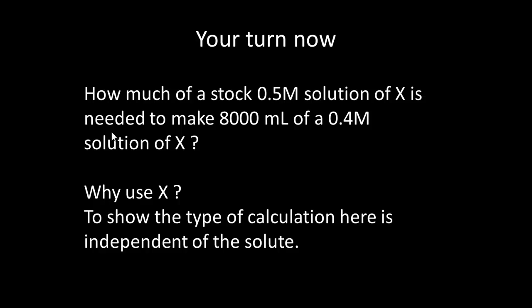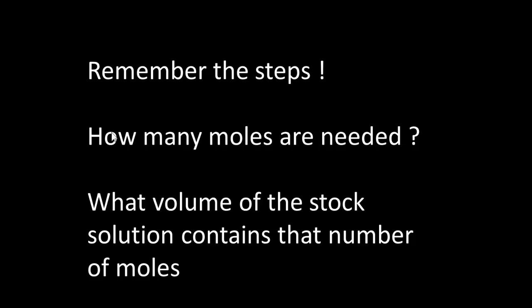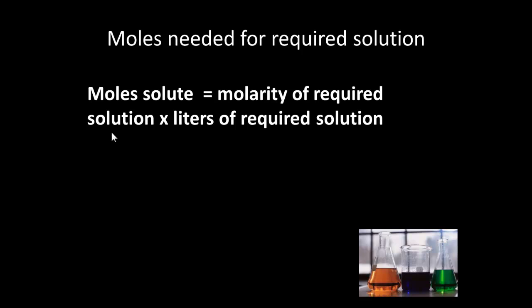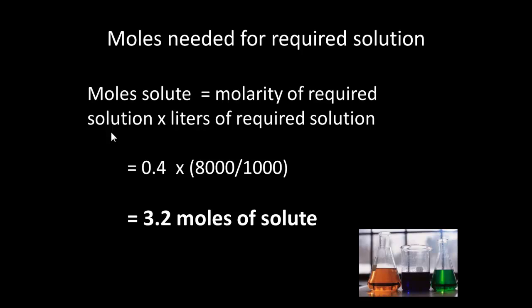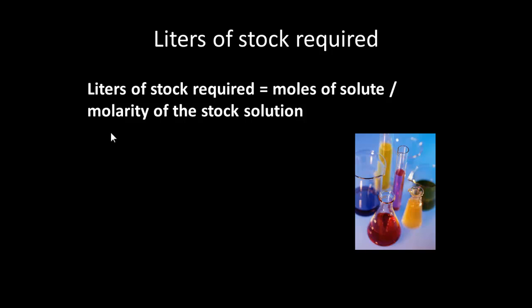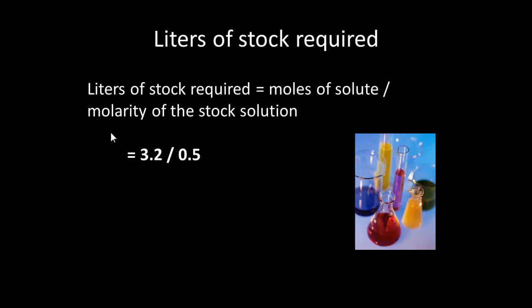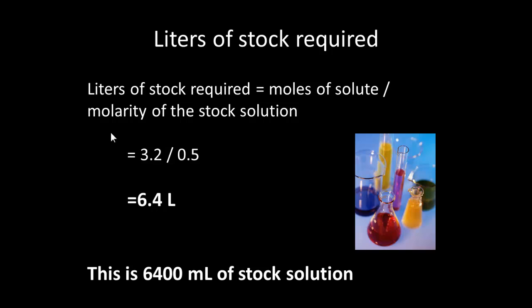How much stock solution of 0.5 molar is needed to make 8,000 mL of a 0.4 molar solution? The calculation is independent of the specific solute. Moles of solute required equals 0.4 times 8 liters, which is 3.2 moles. Liters of stock solution equals 3.2 divided by 0.5, which is 6.4 liters — or 6,400 mL of stock solution required.